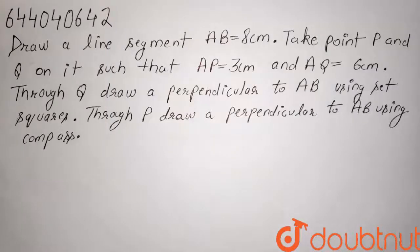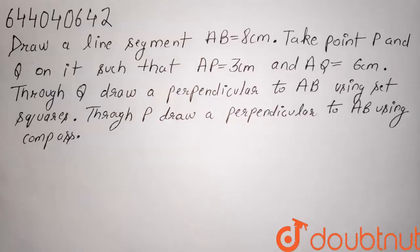The question is: draw a line segment AB equal to 8 cm. Take points P and Q on it such that AP is equal to 3 cm and AQ is equal to 6 cm. Through Q, draw a perpendicular to AB using a set square. Through P, draw a perpendicular to AB using a compass.